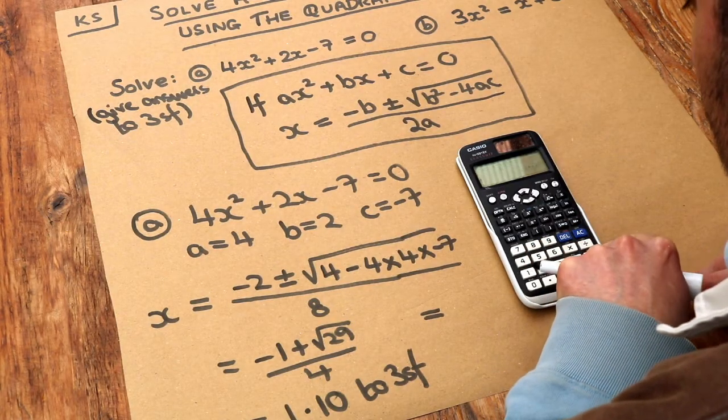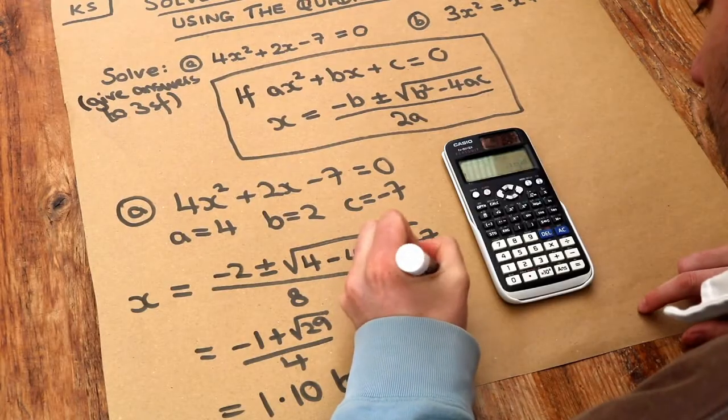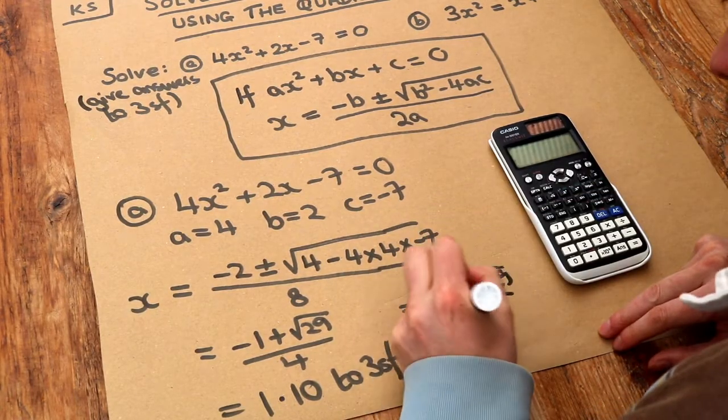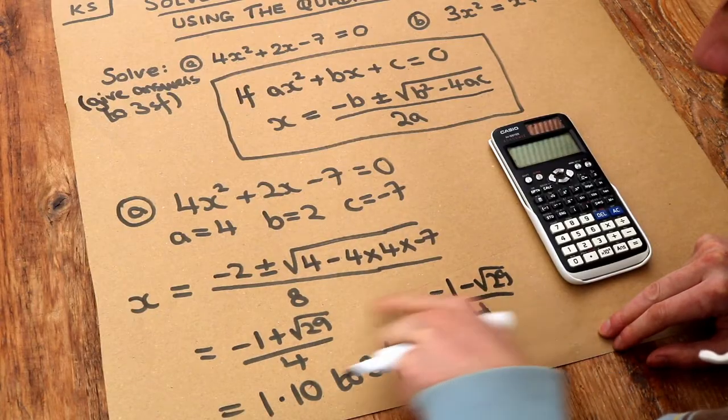And then now it's given me minus 1 minus root 29 over 4. Notice it's just the same as this but you've got a minus instead of a plus.